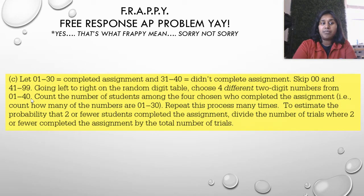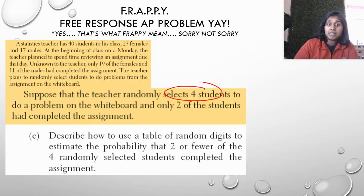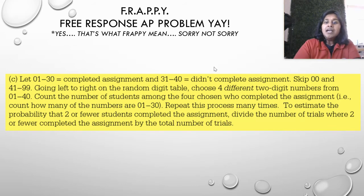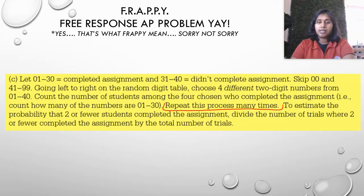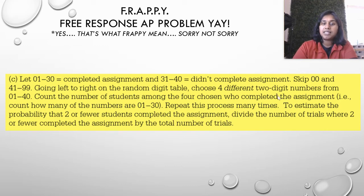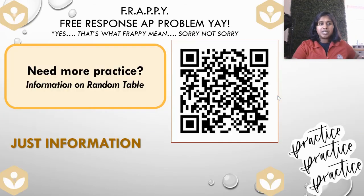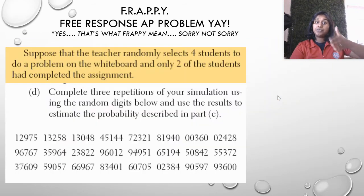So if I'm dealing with two digit numbers, 01 to 30, 31 to 40, then I have to think of all the two digit numbers and account for it. So that's what this magic sentence is talking about right here. Skip 00 and 41 through 99. They're just reminding you of the numbers that don't matter to us. Going left to right on the random table, I'm going to choose four different two digit numbers. Why am I picking four different? Because we're randomly selecting four students. So I pick four different two digit numbers. So if I'm reading left to right, here's a two digit number. We're going to see this in a second. Count the number of students among the four chosen who have completed the assignment. Count how many of the numbers are 01 through 30. Repeat this process many times. This is an important statement because if you're not repeating this process many times, then are you really creating a design experiment? To estimate the probability that two or fewer students completed the assignment, divide the number of trials where two or fewer completed the assignment by the total number of trials.